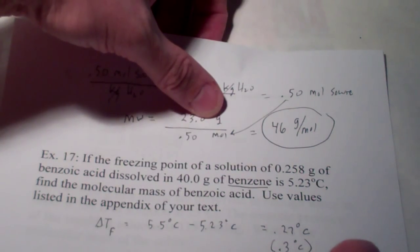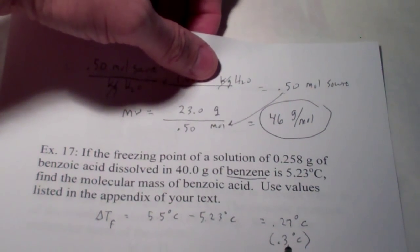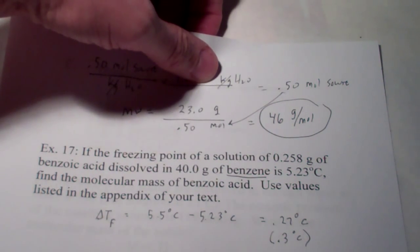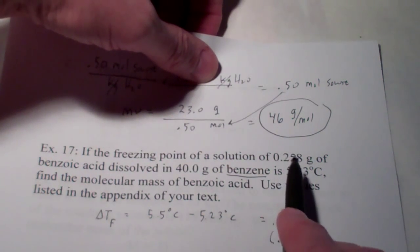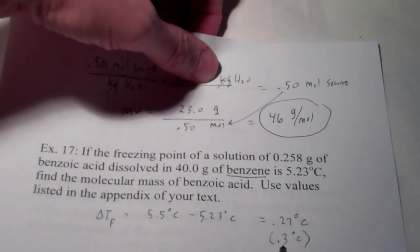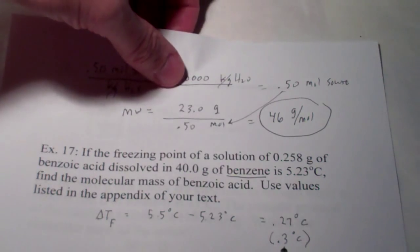And that will only give us one significant figure in our molecular weight. Which, by the way, is quite common. It's difficult to get very accurate temperatures. However, it is very simple to get accurate mass measurements. So oftentimes, temperature or temperature difference in this case is the value, the measurement that limits the number of significant figures in our final value.